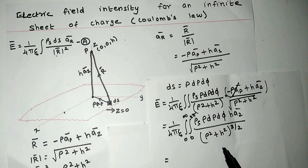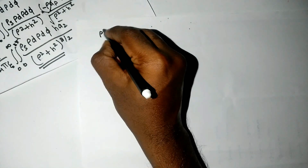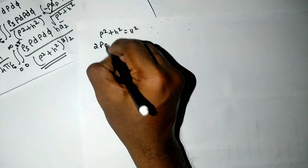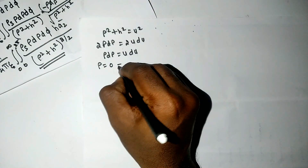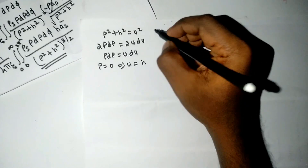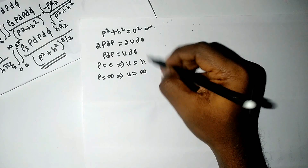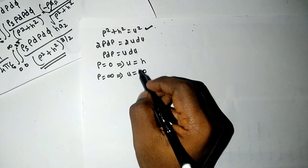It is difficult to directly integrate this term, so we shall use the substitution method. We substitute u² = ρ² + h². Partially differentiating this equation gives 2ρ dρ = 2u du, so ρ dρ = u du. When the variables change from ρ to u, the limits also change: if ρ = 0, then u = h; if ρ = ∞, then u = ∞. These new limits apply to our new equation.